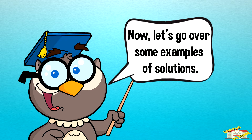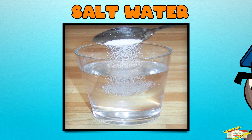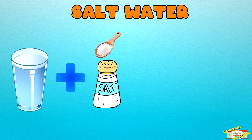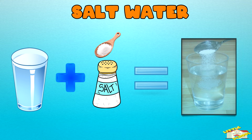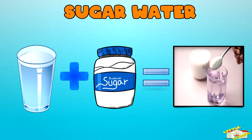Now let's go over some examples of solutions. Salt water — when you mix salt into water, it dissolves and you can't see the salt anymore. Sugar water — stirring sugar into water makes it disappear, but the water tastes sweet.